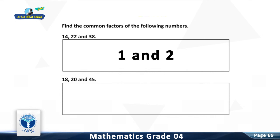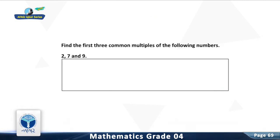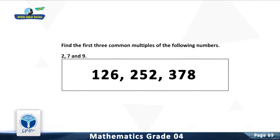Question 2: Find the common factors of 18, 20, and 45. You are right. The common factors of 18, 20, and 45 is 1. Question 1: Find the first three common multiples of 2, 7, and 9. You are right. The first three common multiples of 2, 7, and 9 are 126, 252, and 378.